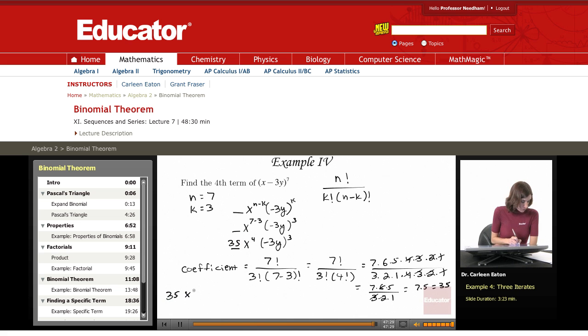x to the fourth, negative 3y cubed, which equals 35x to the fourth, negative 3 squared is 9, times negative 3 again, is negative 27.